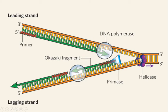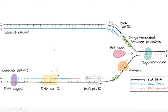Jab dono naye strands bantey hain, ek andar ek purana aur ek naya ban jayega. Isko hum semi-conservative method se divide hona kehte hain. Yeh diagram mein replication fork ka hai — Helicase enzyme yahaan DNA ke strands ko alag karta ja raha hai. Ek strand jo ban raha hai woh leading strand continuously ban raha hai, replication fork ki taraf.